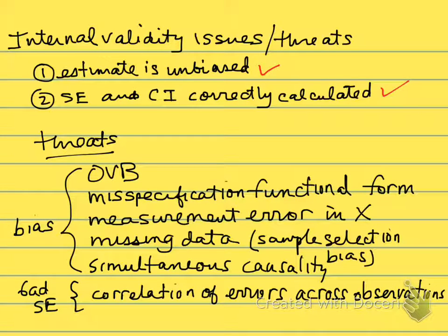For bias in particular, the usual things we identify are omitted variable bias, misspecification of the functional form, measurement error in X, missing data where we have sample selection bias, and simultaneous causality. For bad standard errors, there's a whole host of issues. We'll look briefly at when we have correlation of errors across observations. I won't talk about them all here, just some of them.